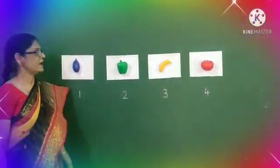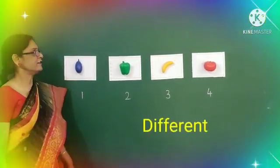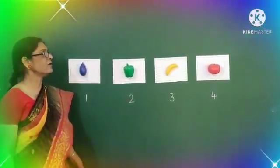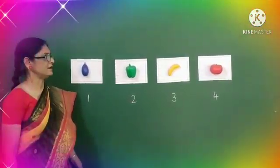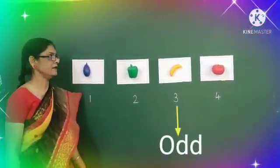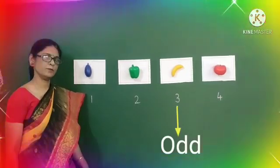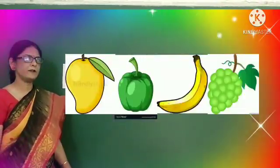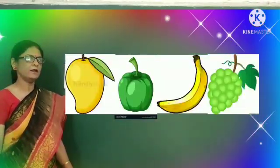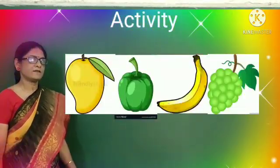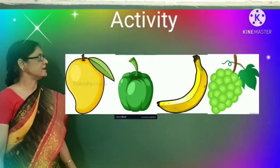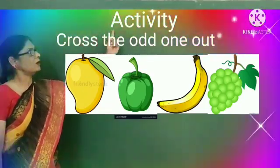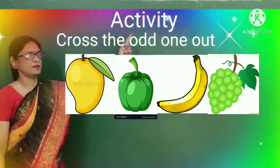So children, banana is different in this group. Banana is odd in this group. And children, now we will do an interesting activity — cross the odd one out.